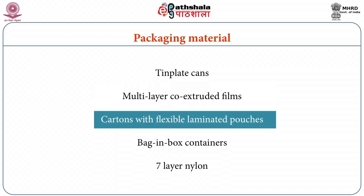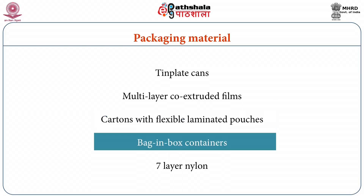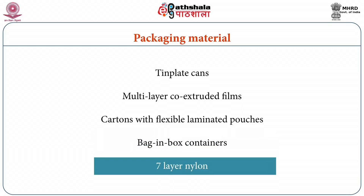Ghee is also marketed in lined cartons with flexible laminated plastics as inner liner materials and in Tetra Pak. Laminated pouches of metalized polyester based films are also used. Recently, ghee is packed in certain laminates and bag-in-box containers, which comprise a pre-sealed bag made of polyethylene and polyamide laminates fitted with a spout and housed in a corrugated fibre box or duplex board box. Seven-layer nylon-containing self-standing pouches with closure are also used, and a laminate of HDPE and LDPE is also used for packaging of ghee.